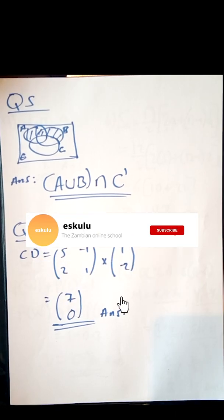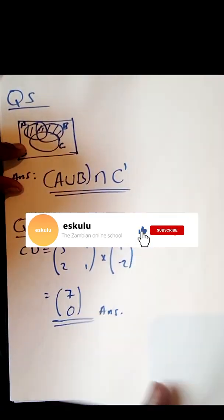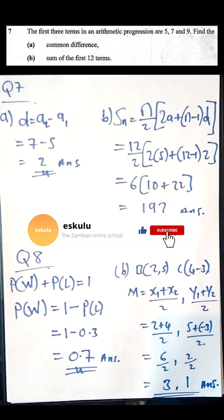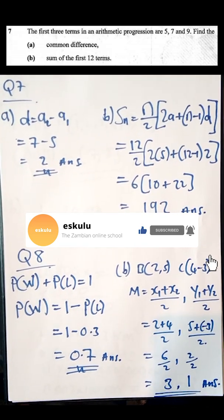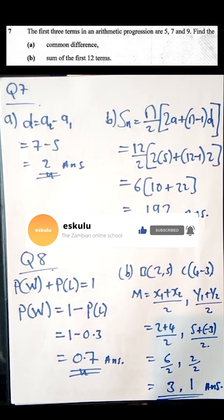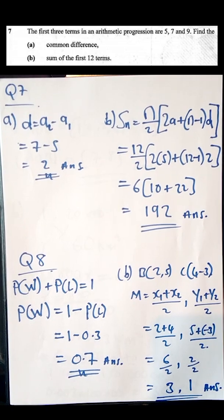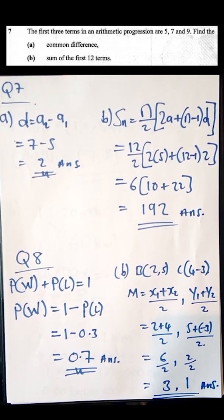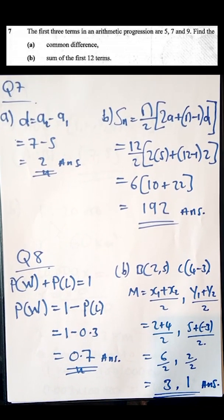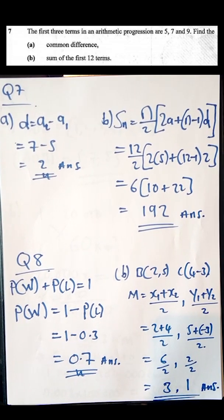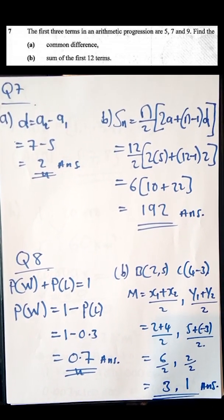Let's move on to question number seven. Question seven appears to be one of those questions that you never miss in paper one. It is under arithmetic progression. The first three terms in an arithmetic progression are five, seven, and nine. Find the common difference.